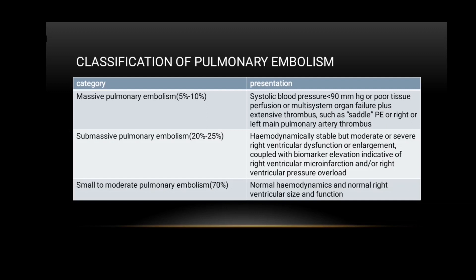Pulmonary embolism can be classified as massive, submassive, and small to moderate. Massive PE occurs in 5 to 10% of cases, presenting with systolic blood pressure less than 90 mmHg, poor tissue perfusion, or multi-system organ failure, plus extensive thrombosis such as saddle PE or right or left main pulmonary artery thrombosis. Submassive PE, comprising 20 to 25% of cases, is hemodynamically stable but shows moderate or severe right ventricular dysfunction or enlargement, possibly with biomarker elevation. Small to moderate PE, the most common form at 70% of cases, presents with normal hemodynamics and normal right ventricular size and function.